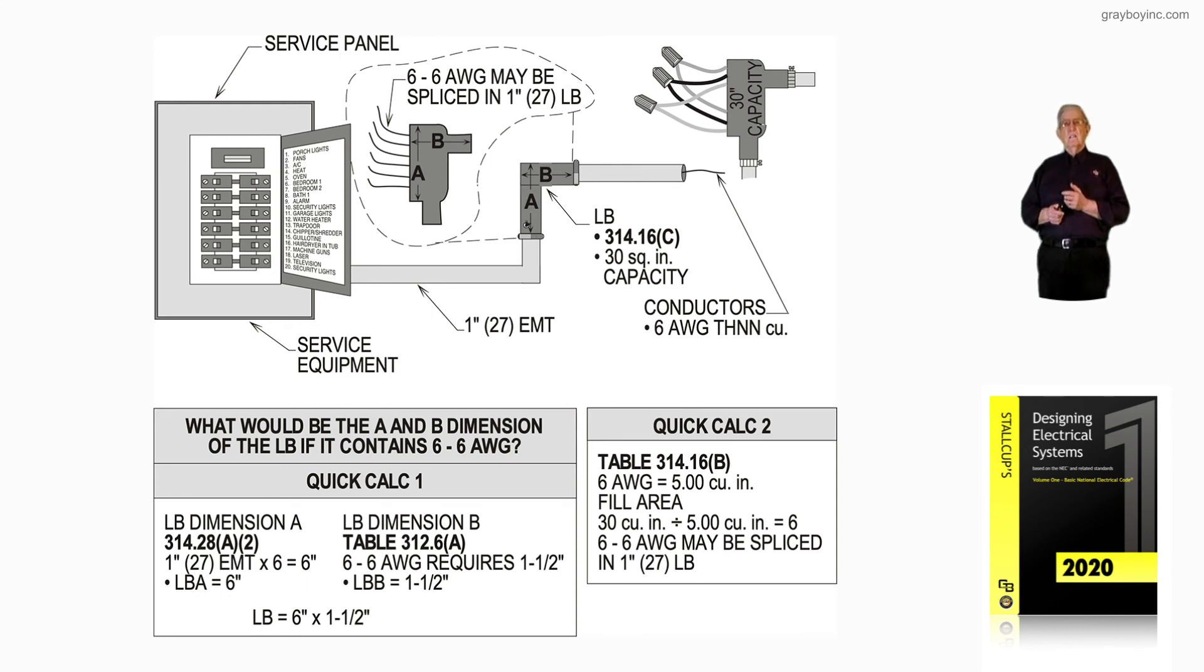Now, the LB has a 30 cubic inch capacity, so that's where the 30 inch came from in quick calc two where you divided by five. So, only splice in an LB that is listed with the capacity to do so.